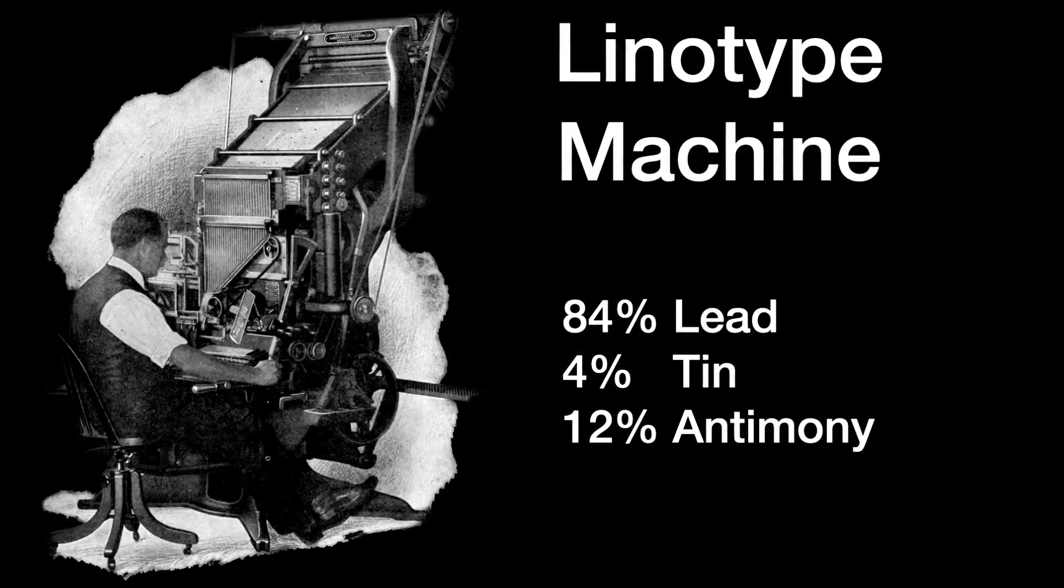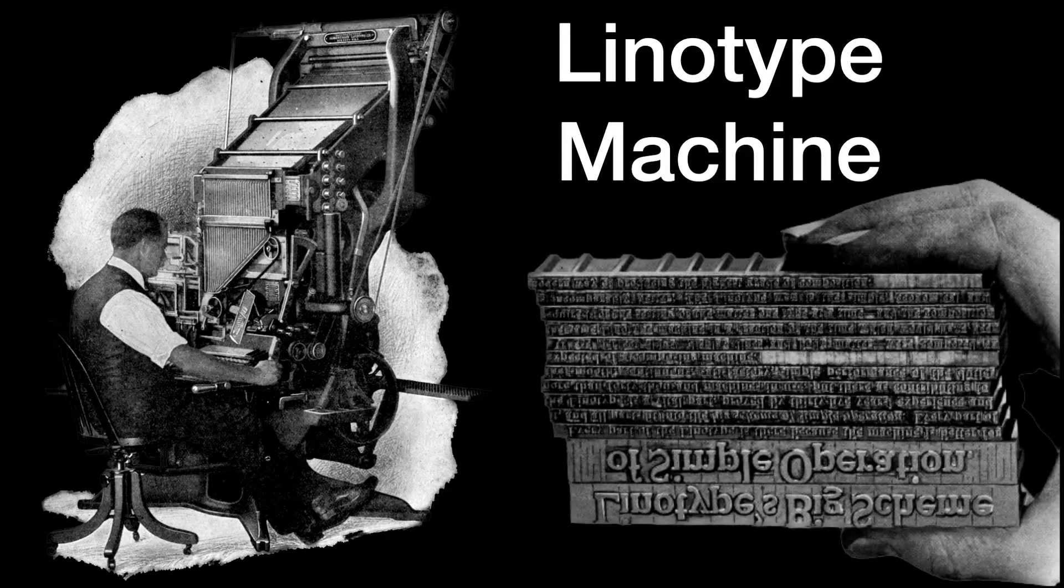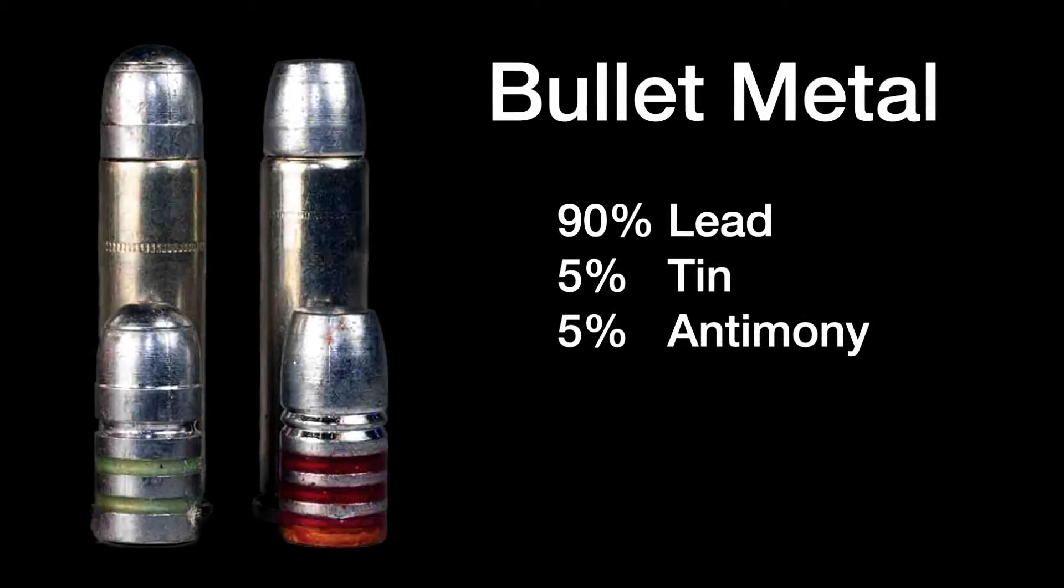Slightly less laborious were linotype machines. Here the operator sat in front of an actual keyboard and typed the text. Liquid metal was instantly cast into lines of type that were mounted in the chase printing frames. Far less work than dealing with each letter individually. Again, antimony expanding on freezing made sure the type came out crisp.